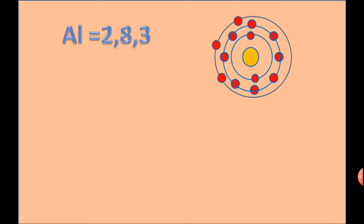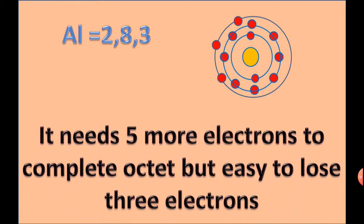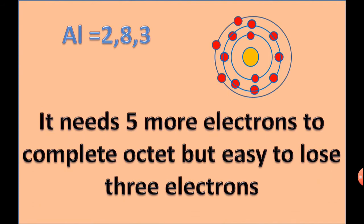Aluminium has electronic configuration 2,8,3. It needs 5 more electrons to complete the octet, but it is easy to lose 3 electrons. Hence, the valency of Aluminium is equal to 3.